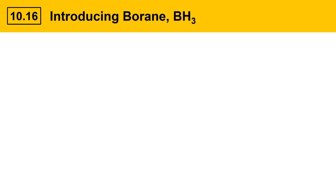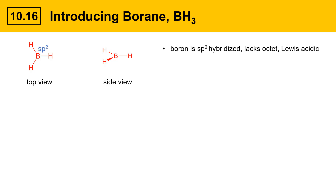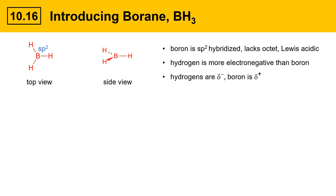On this slide we're going to talk about the reagent BH3, borane. This is a top view of borane, BH3, and this is a side view showing borane from an edge perspective. The boron atom is sp2 hybridized, it lacks an octet, and it's a Lewis acid. Hydrogen is more electronegative than boron, so in BH3 the hydrogens have a partial negative charge while the boron has a partial positive. Borane contains three reactive hydrogens, therefore each BH3 can react with three molecules of alkene.